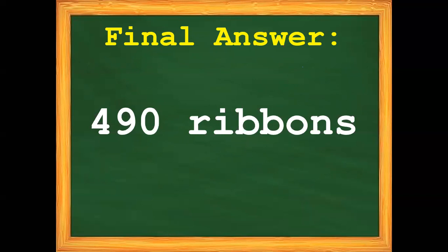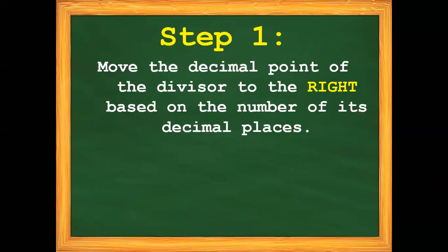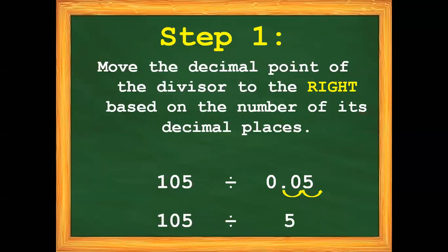Let's proceed to example number 2. We have 105 divided by 5 hundredths. Step 1: Move the decimal point of the divisor to the right based on the number of its decimal places. We have 2 decimal places in 5 hundredths, so we need to move twice to the right. So now we have 105 divided by 5.